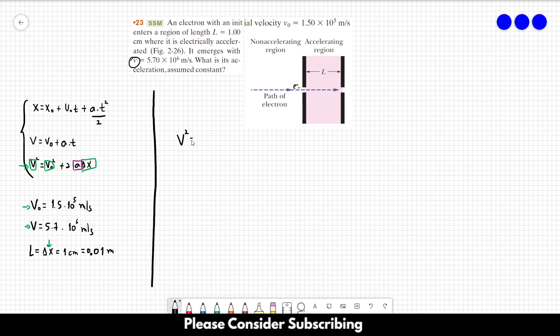So we will use v squared equals to v₀ squared plus 2 times a times delta x. Let's isolate the acceleration. Then we get v squared minus v₀ squared over 2 times delta x. Let's replace the letters by the numbers. And then we will get 5.7 times 10 to the 6 squared minus 1.5 times 10 to the 5 squared over 2 times 0.01 meters. And then if we make this calculation, we will have 1.62 times 10 to the 15 meters per second squared. And this is the answer of this exercise. Thank you.